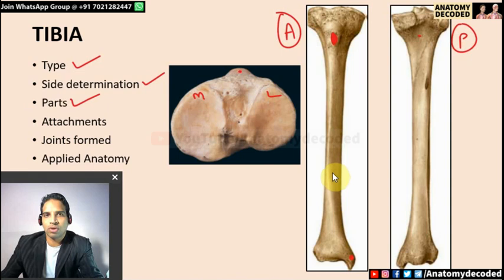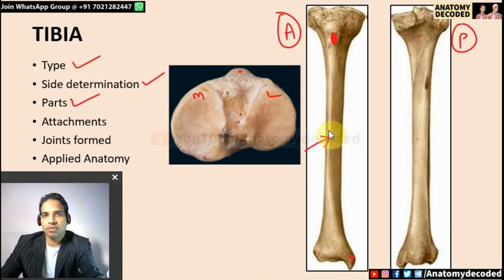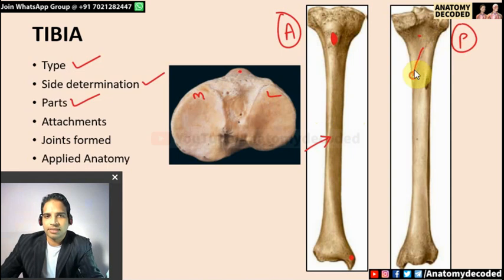The shaft of tibia has three borders and three surfaces. The anterior border is called the shin of the tibia — it is subcutaneous throughout. The medial surface is also subcutaneous. Because much of the area is subcutaneous, there are very few muscle attachments on tibia compared to fibula. The lateral surface gives attachment to tibialis anterior. There is an oblique line called the soleal line, giving attachment to soleus. The nutrient foramen of tibia is the largest amongst all bones of the body.